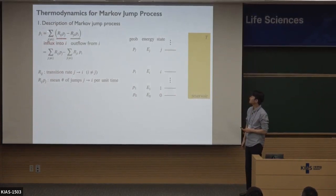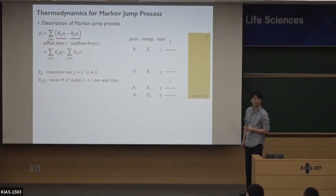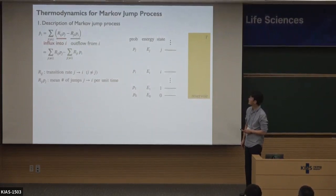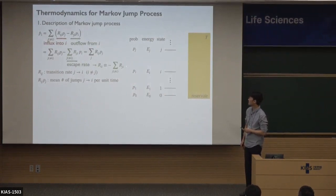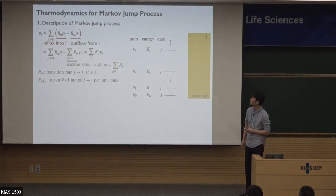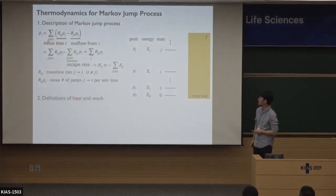Now this summation applies to both terms and we can divide it into two parts. Looking at the second term, the summation only applies to the transition rate, not the probability, because the summation is for all states except I. So we can say this is the escape rate from state I. If we define the diagonal term of this transition matrix as minus the escape rate, then we can write this master equation in a simpler way. Now it includes the I index, and we can define work and heat for this Markov jump process.